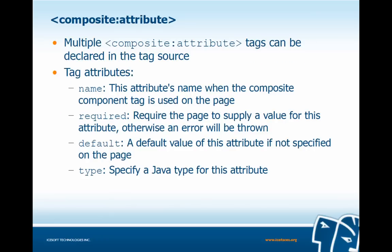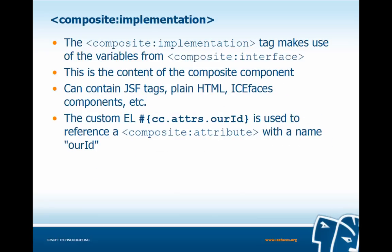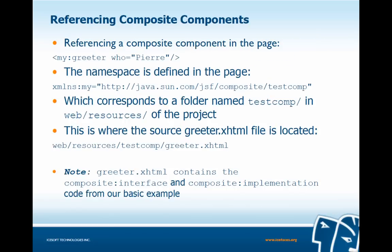The composite interface declares available attributes — for example, name='who' required='true', meaning the page must supply a value. Multiple attribute tags can be declared; attributes include name, required, default value, and Java type. The composite implementation makes use of variables from the composite interface using the EL expression cc.attributes.rid, for example, to reference a composite attribute. Referencing a composite component on the page is as simple as placing the namespace, component name, and any needed attributes.